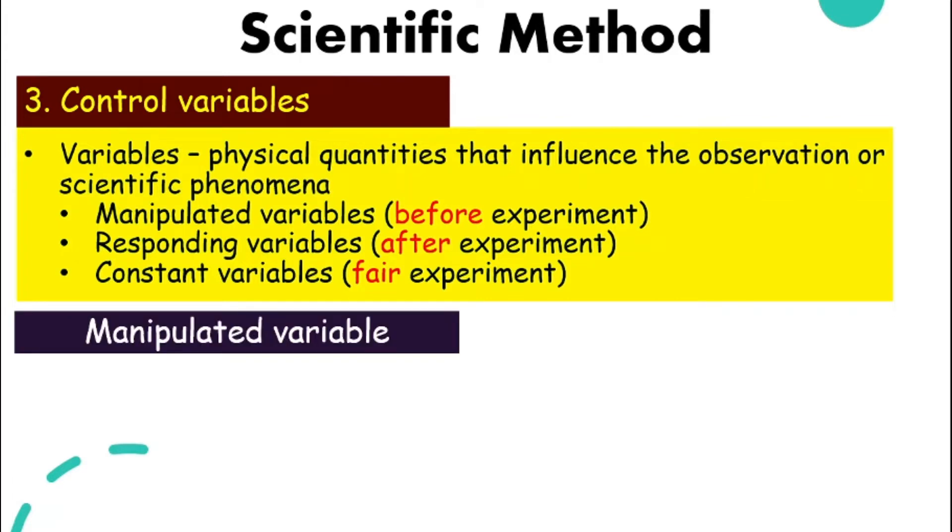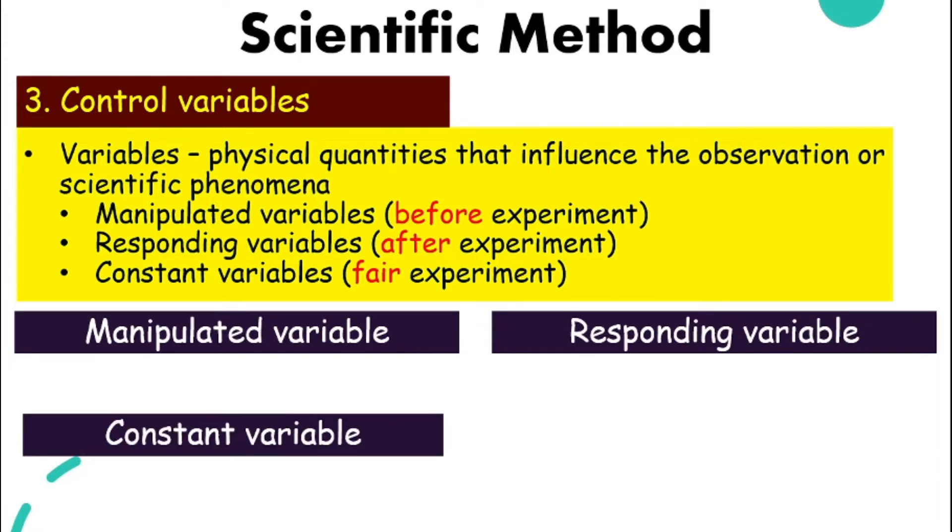In this case of the girl wanting to find out what she can use to absorb the water quickly, the manipulated variable will be type of towels. Why? Because we already determined it before the experiment. We already know we want to test the cloth and tissue paper. Before the experiment, we already fixed these two. So that is your manipulated variable.